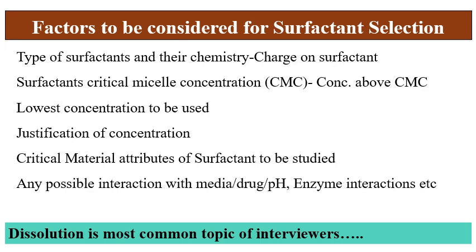What factors should be considered for surfactant selection? First, check the surfactant chemistry — the charge on the surfactant, whether it is anionic, cationic, or zwitterionic. Then, CMC or critical micelle concentration is a very important consideration. CMC is the concentration above which the surfactant forms micelles and increases the solubility of the drug. The concentration used must be above the CMC.